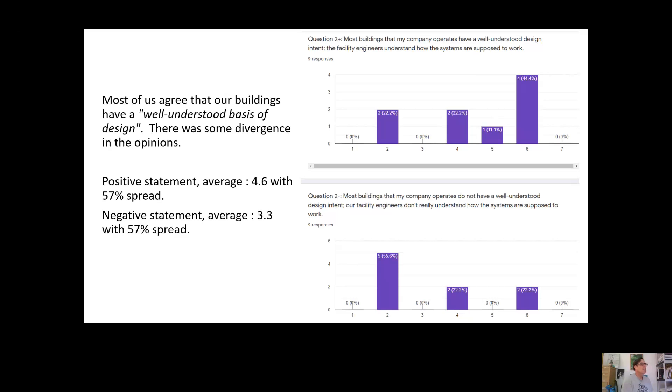Second question, most buildings that my company operates have a well-understood basis or design intent. The facility engineers understand how the systems are supposed to work. Most of us agreed with this, and there was just some divergence in the opinions. So you could see we were 4.6 on the positive statement, 3.3 on the negative statement, and that 57% spread. But you can look at the data, the 57% spread there sort of represents a little more overall spread.